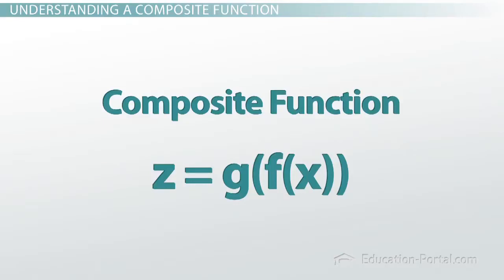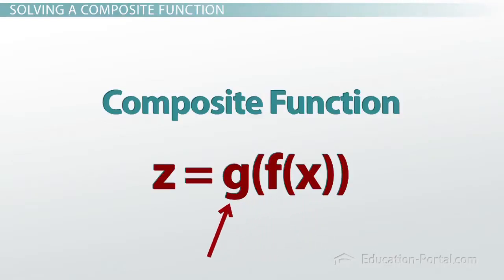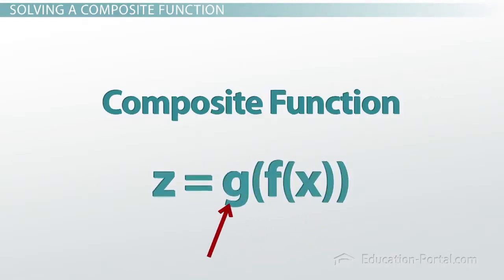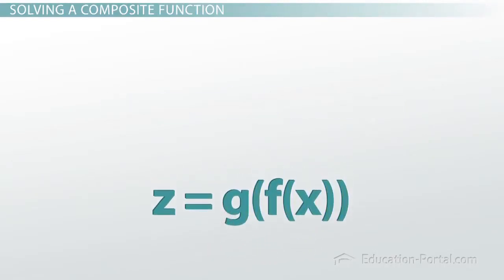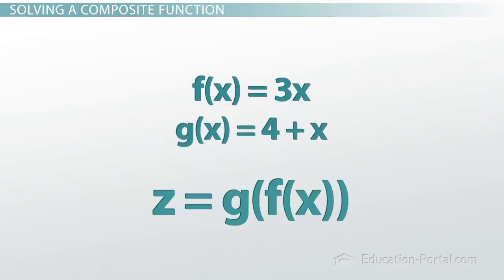When looking at composite functions, there are two main points to keep in mind. First, evaluate the function from the inside out — we need to figure out what f of x is before we figure out what g is. For example, let f of x equal 3x and g of x equal 4 plus x.